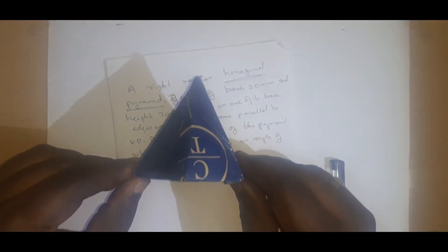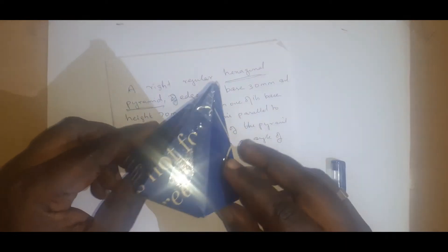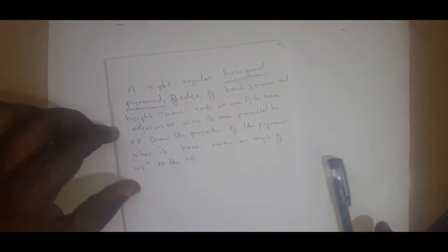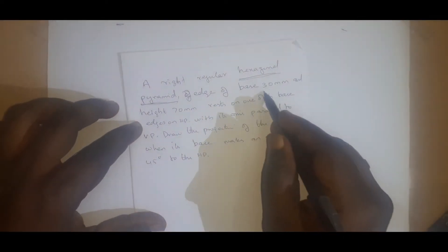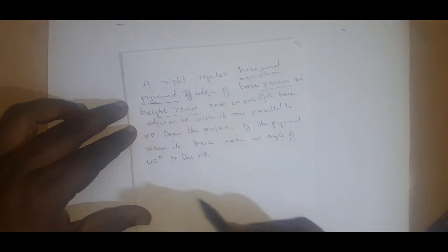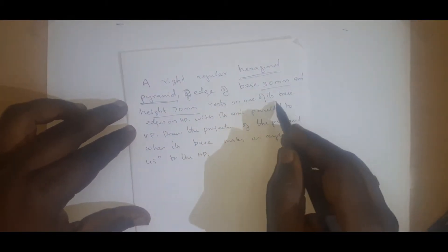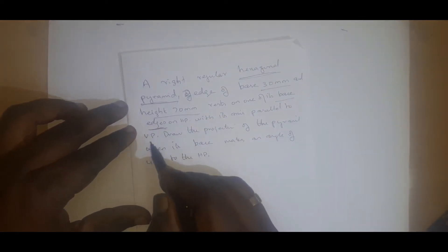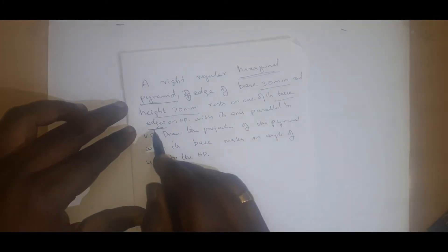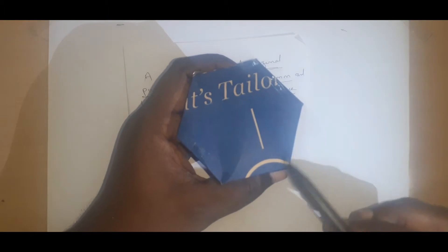The pyramid will be looking in this way — a hexagonal pyramid with six triangular surfaces. The dimensions given are: edge of base is 30 mm and height is 70 mm. It rests on one of its base edges. With one of its base edges it is resting, and here it has six base edges, so with any one of them it is resting.